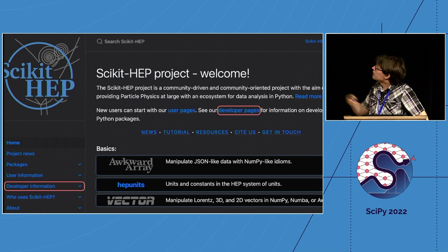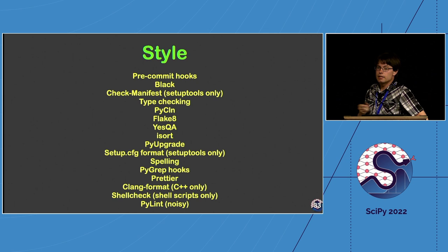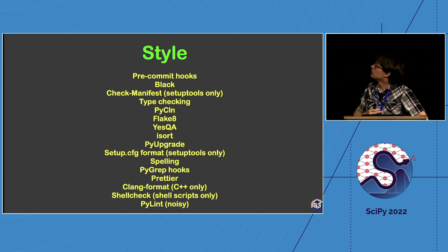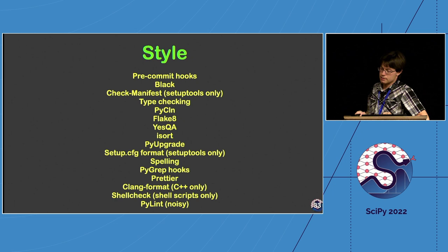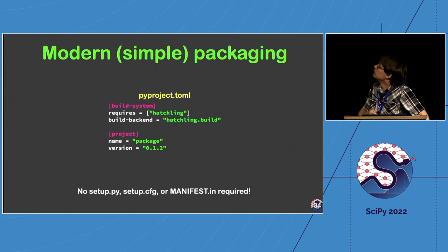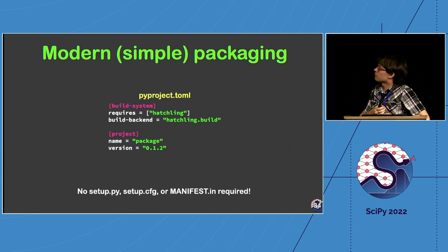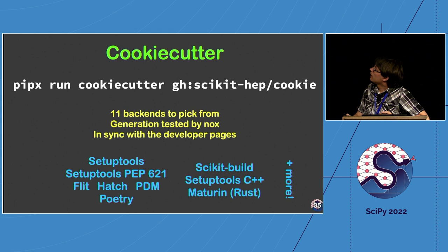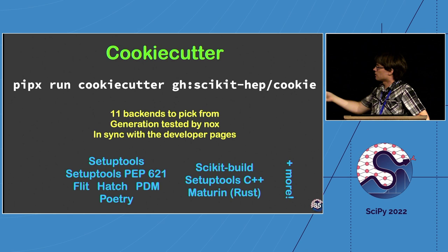To find the developer pages, go to scikit-hep.org and click on developer pages. For style, we recommend using the pre-commit tool and provide guidance on MyPy type checking, Flake8 setup, and recommendations for tools like Pylint. Pyproject.toml is really all you need today to do a package. The cookiecutter can generate packages both in the classic binary style and in these simpler forms — we recommend Hatchling.